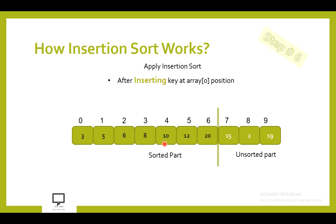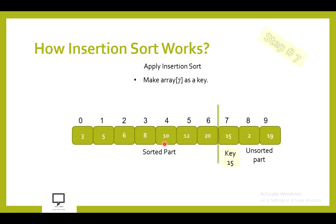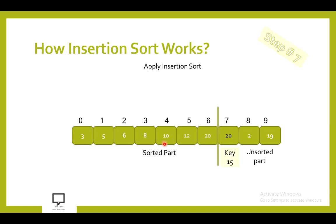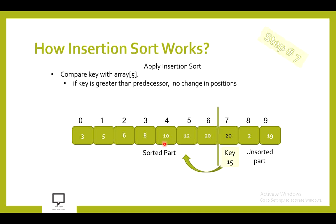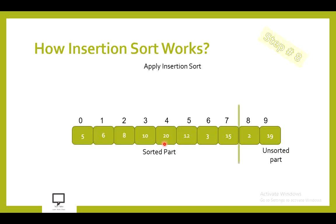In step 7, we make array[7] the key value, which is 15. We compare 15 with array[6], which is 20. Condition is false, so shift 20 to array[7]. We compare 15 with array[5], which is 12. Key 15 is greater than 12 — condition is true, so no shifting is required. We insert 15 at array[6] position. The sorted array is incremented by 1, unsorted is decremented by 1.